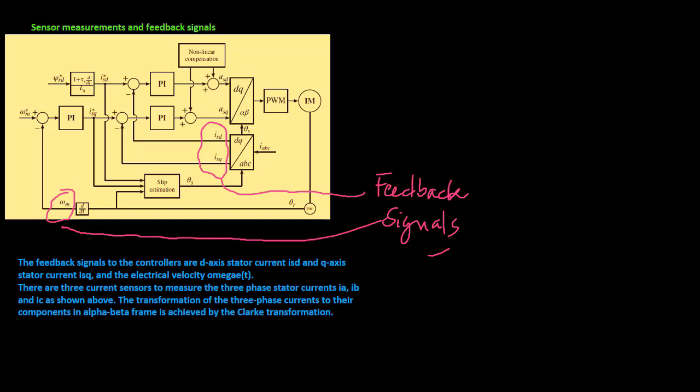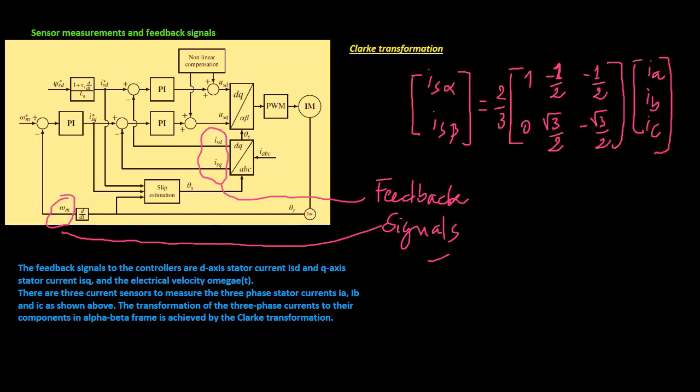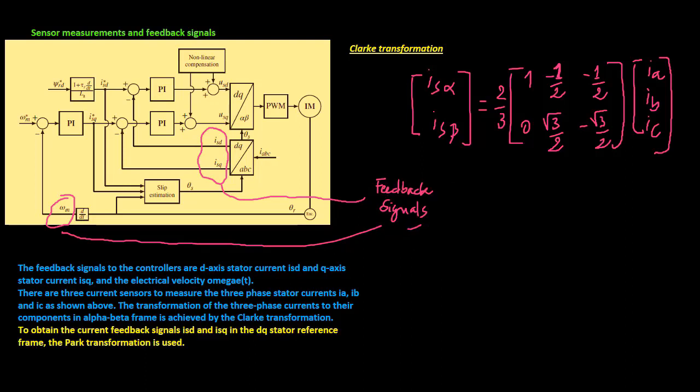There are three current sensors to measure the three-phase stator currents ia, ib, and ic. As shown in this figure, the transformation of the three-phase currents to their components in alpha-beta frame is achieved by the Clark transformation.